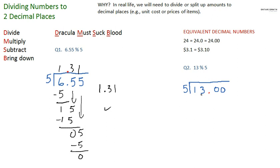So 5 goes into 1. Well, 0 times, right? 5 times 0 is 0. 1, drop the 3. 5 goes into 13, 2 times. 5 times 2 is 10. Subtract. 3.